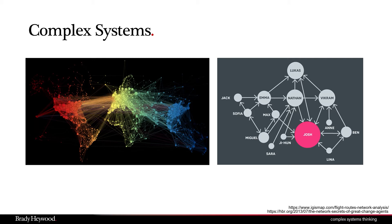The way to think about complex systems — and we're going to continuously unpack this as we go through the presentation — is that complex systems are all about the interactions. They're not about the components in the system; they're about how those components interact with one another. Because it's these interactions that produce patterns of relationships, and it's these patterns of relationships that drive behavior we don't necessarily expect to see in these systems, like the power laws.